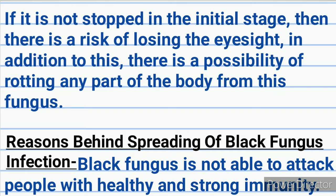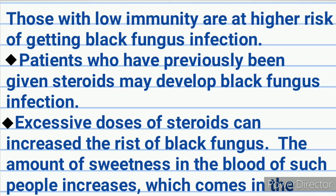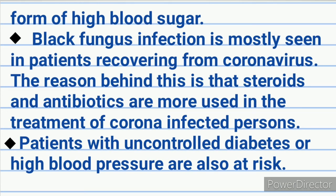Reasons behind spreading of black fungus infection: black fungus is not able to attack people with healthy and strong immunity. Those with low immunity are at higher risk. We will write all the causes in points. First point: patients who have previously been given steroids may develop black fungus infection. Next point: excessive doses of steroids can increase the risk, as the amount of sugar in the blood increases, which comes in the form of high blood sugar.